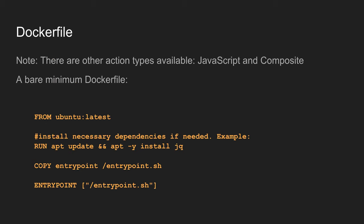First, for the Dockerfile — there are multiple action types one could use: JavaScript, composite, and Docker-based. For this one I'll use a bare minimum Dockerfile. As you can see, it uses Ubuntu latest, I'll be installing JQ in it, and I'll define my action code as the entry point.